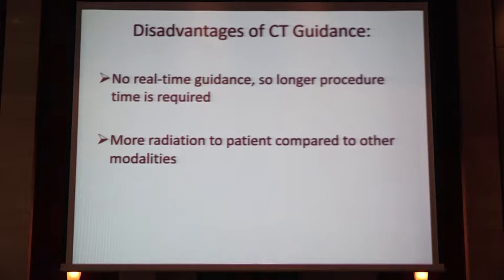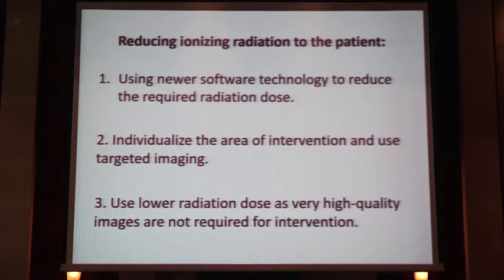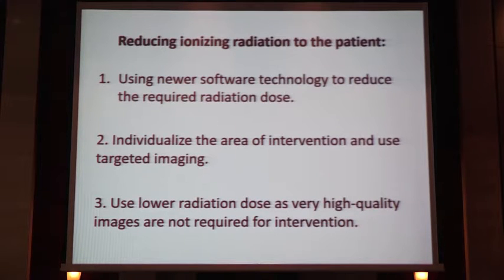However, CT guidance is not without disadvantages. Whenever you are doing CT guidance, you have to be very good at putting your needle in under fluoroscopy, because there is no real-time guidance. You put the needle, adjust it, go back, and take a scan again — that increases radiation for the patient quite a lot and increases procedure time, especially for blocks like superior hypogastric plexus block. To minimize radiation: use newer software technologies where you don't need a very high-quality diagnostic picture; individualize your area of intervention; use the biopsy mode in newer CT scans so only a thin slice of a small targeted region is taken; and use lower radiation settings, which your technical assistant for CT scan can do for you.